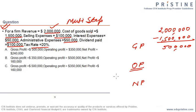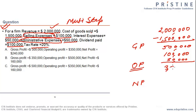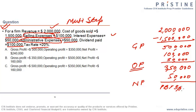From gross profit of $500,000, we reduce operating expenses: selling expense of $100,000 and admin expense of $50,000, leaving an operating profit of $350,000. Reducing interest expense of $50,000 gives profit before tax of $300,000. Applying a 20% tax rate gives a tax charge of $60,000, resulting in a net profit of $240,000.